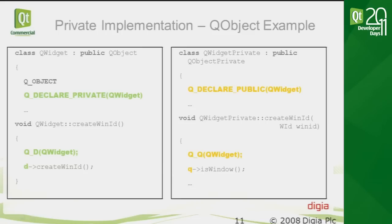The Q_DECLARE macros are used in the class declaration in the header file to define those d_func() and q_func() functions. Then in the implementation in the CPP file, you can use the Q_D and Q_Q macros to create local variables to access the private or public side.